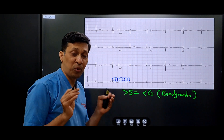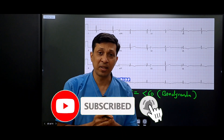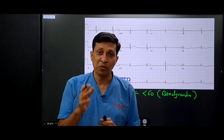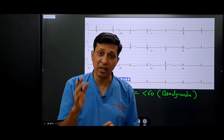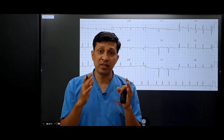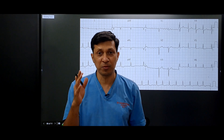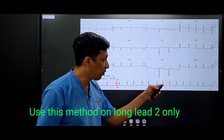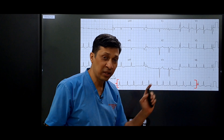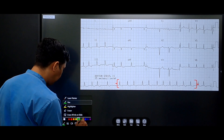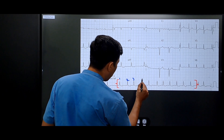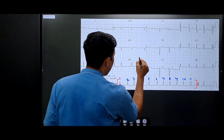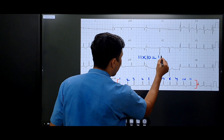Now let's see how heart rate is calculated for irregular rhythm. When the rhythm is irregular, we use the 6-second or 30 large box method. We start from a point and count 30 large boxes to mark the 6-second window. Within that window, we count the number of R waves: 1, 2, 3, 4, 5, 6, 7, 8, 9, 10, 11. The heart rate is 11 multiplied by 10, which equals 110. That is the heart rate of the patient.